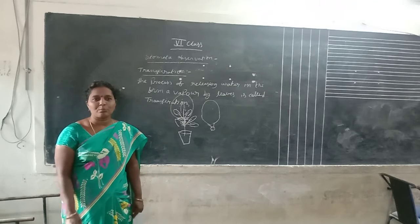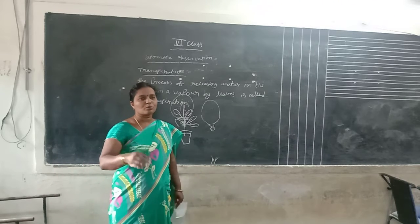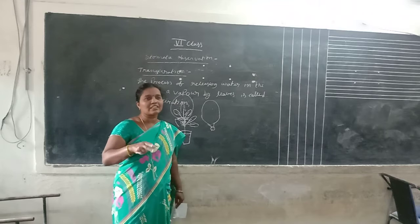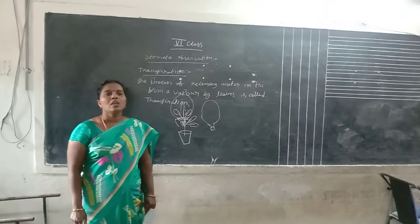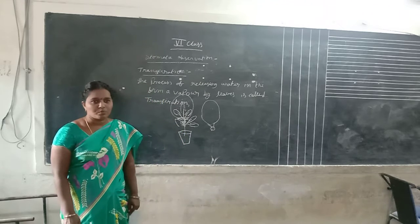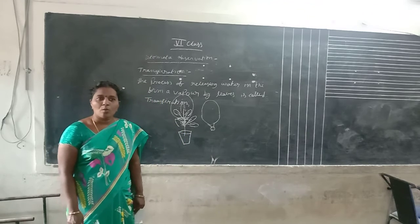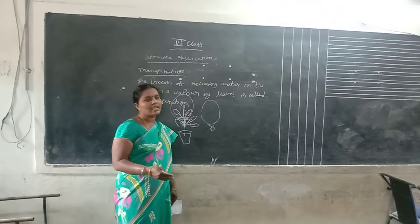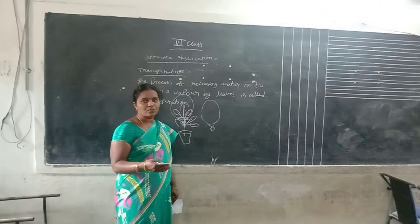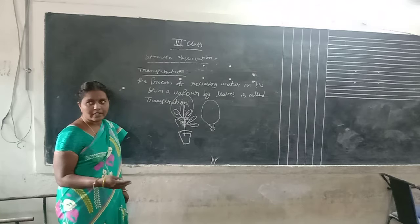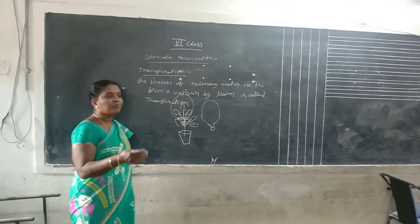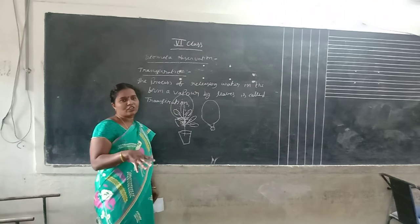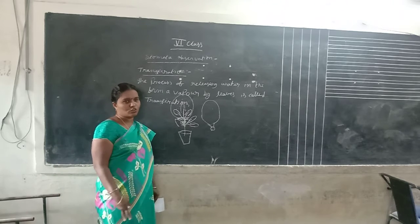Annual plants are autotrophs. Autotrophs means self-food preparers. The preparation of food by the plant itself is called autotrophism.